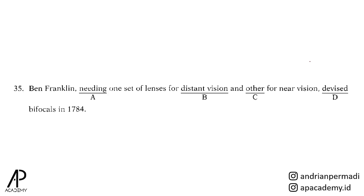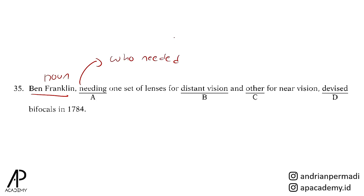Untuk nomor 35 ini, needing itu sudah benar karena needing yang muncul setelah Ben Franklin yang merupakan noun. Itu salah satu ciri bahwa needing tersebut adalah reduced adjective clause. Awal mulanya, needing ini berasal dari who needed. Dalam pola reduce adjective clause kalimat aktif, who yang berfungsi sebagai conjunction sekaligus subject dihilangkan, lalu otomatis needed ini akan berubah menjadi needing.